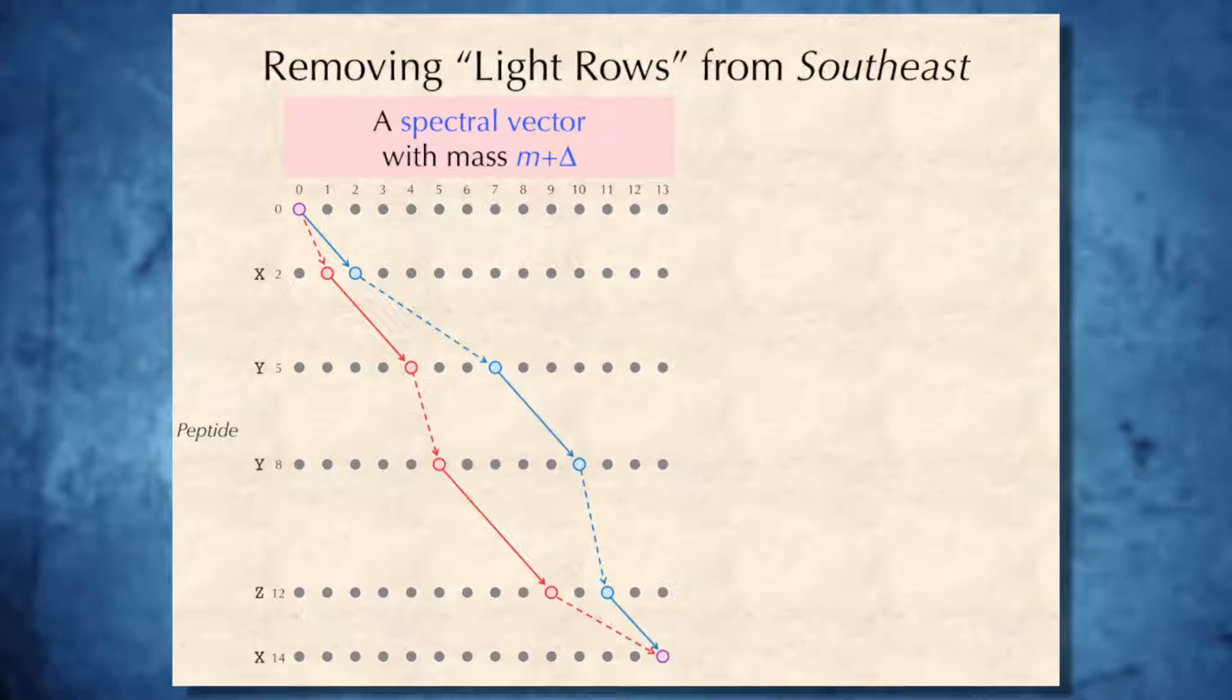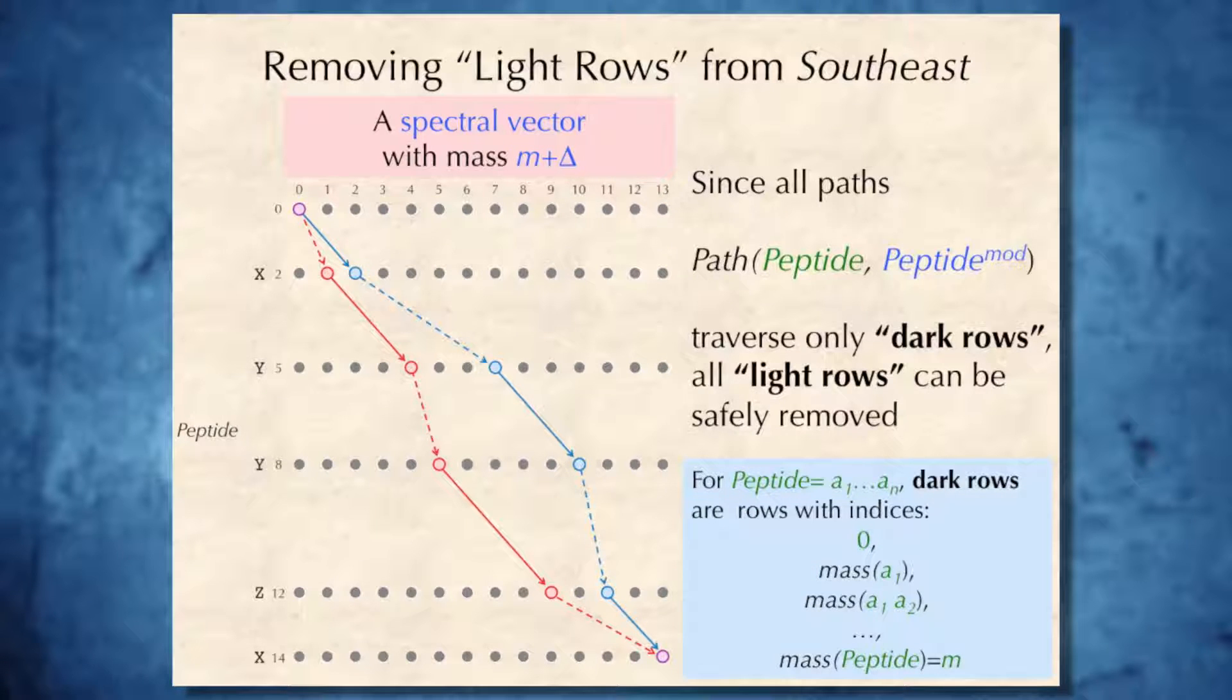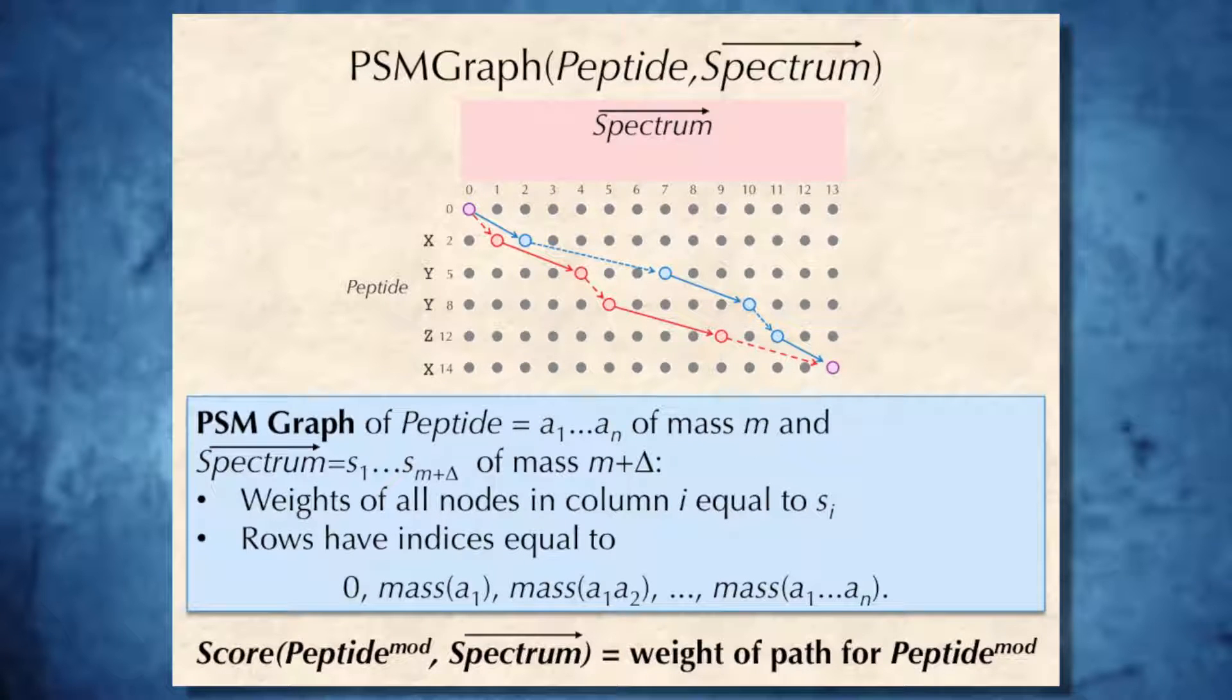And moreover, I will remove all light rows from this graph because I don't need them. All paths corresponding to a pair of unmodified and modified peptide traverse only dark rows in this graph, and therefore all light rows can be safely removed. The resulting graph will be called PSM graph of peptide and spectrum,